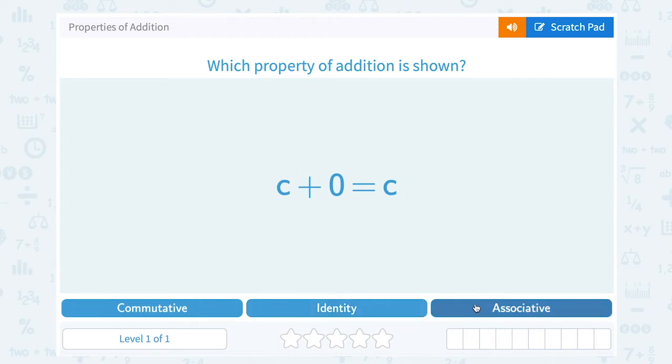Now associative, that is when they change the order by moving the grouping symbols. But in this case we can see that it's going to be identity property.